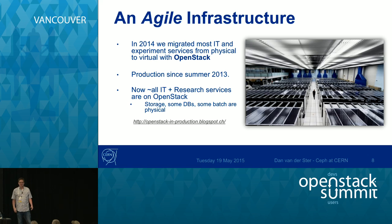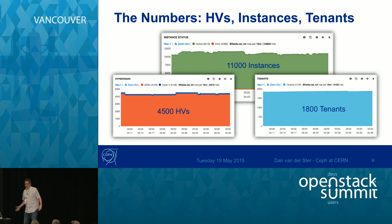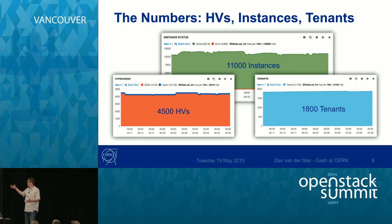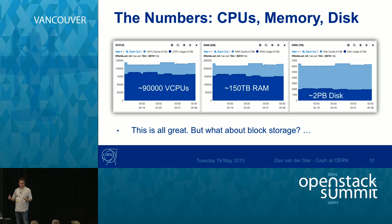The only things that are not virtualized is the storage — though I'm asked repeatedly by some managers why I don't put Ceph in virtual machines. Some databases and our big batch farm are also not virtual. Here are some numbers about our OpenStack installation: we have close to 5,000 hypervisors, 11,000 instances, and 1,800 tenants. We have close to 100,000 CPUs in production, 150 terabytes of RAM, and two petabytes of local ephemeral disk on the hypervisors.